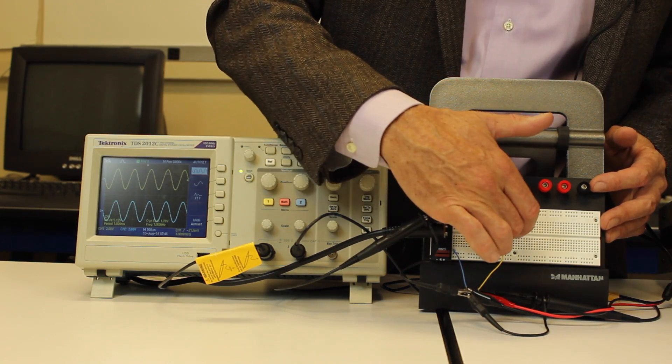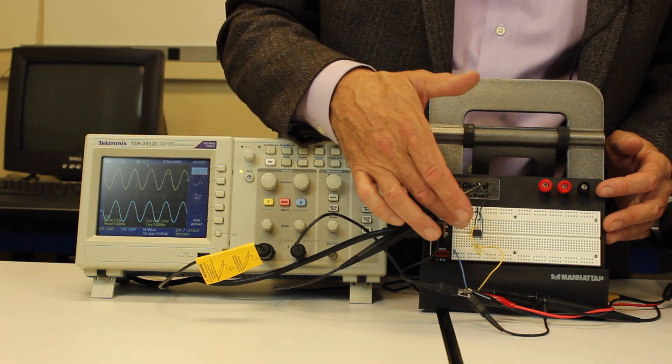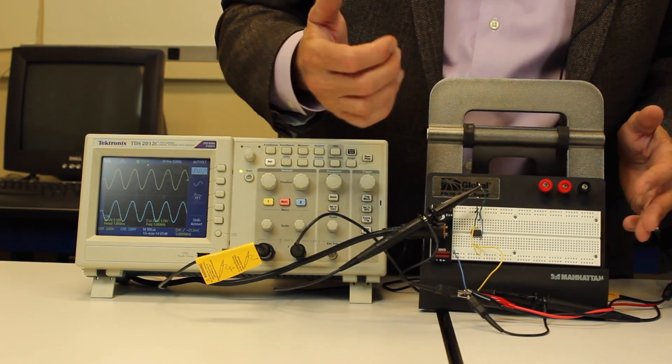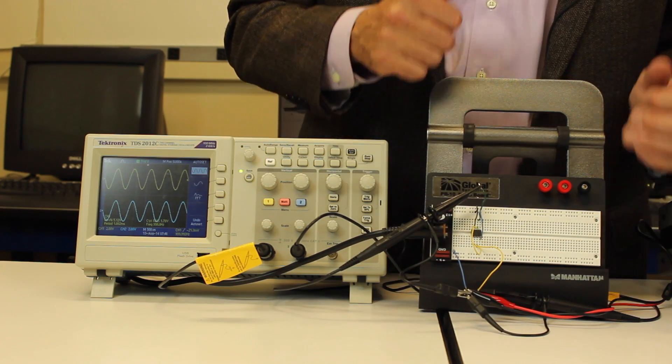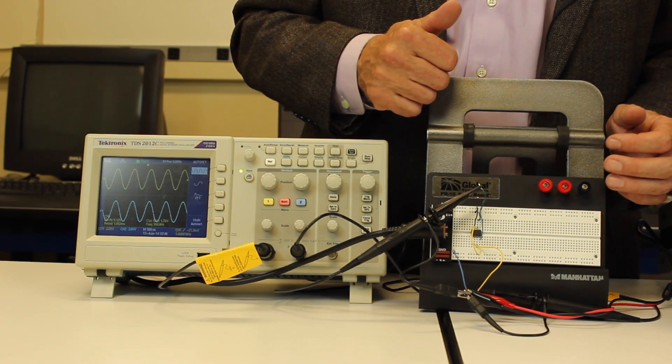The op-amp, you can see, is laid across the middle there, so that's kind of obvious. And a lot of the legs just don't have anything hooked into them. The critical ones, the two inputs, the output, and most critical, the power, VCC and VEE.